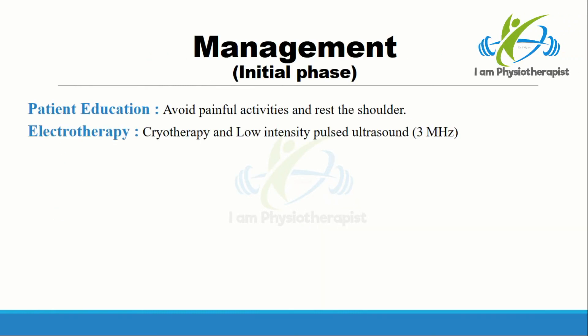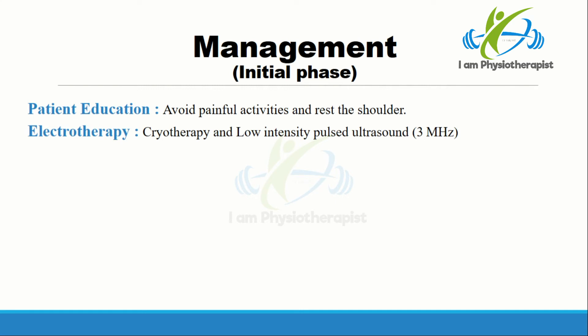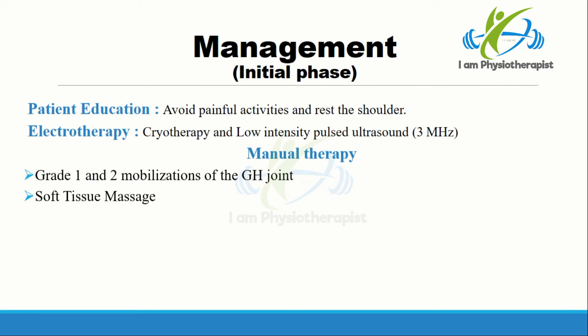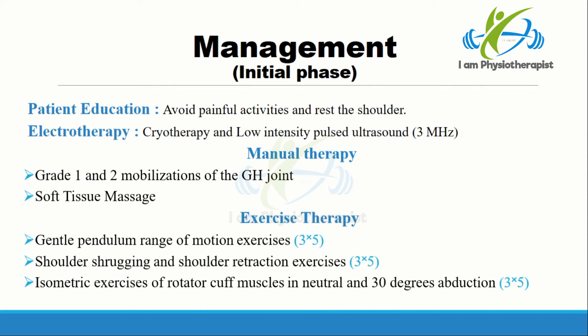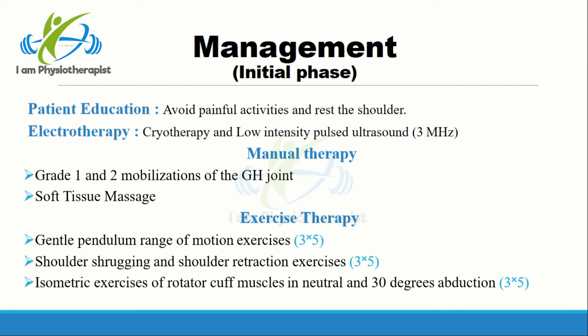Management in the initial phase: the patient was educated about her problem and advised to avoid painful activities and the importance of relative rest of the shoulder. Cryotherapy was advised to reduce inflammation and pain. Low intensity pulsed ultrasound was used to facilitate healing. Manual therapy techniques including grade 1 and 2 accessory mobilizations of the glenohumeral joint and soft tissue mobilization were performed. Exercises advised included gentle pendulum range of motion exercises, shoulder shrugging and shoulder retraction exercises, and isometric exercises of rotator cuff muscles in neutral and 30 degrees abduction.